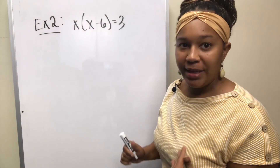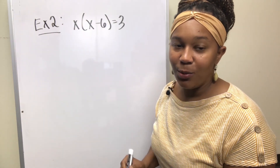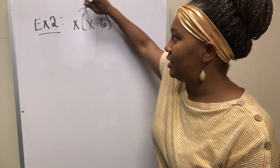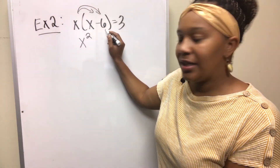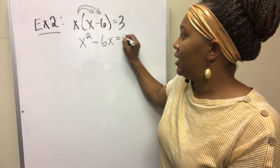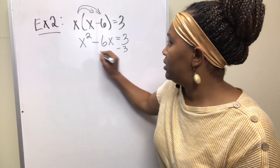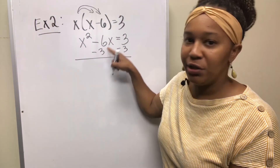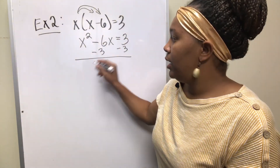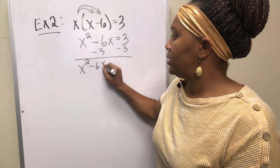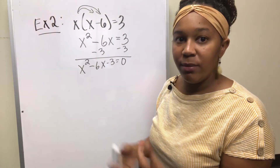Let's try another one. Example 2: solve x times (x minus 6) equals 3. This is a quadratic equation — it doesn't look like one, but we can make it look like one. First, distribute the x: x times x is x squared, and x times 6 is minus 6x, equals 3. Now get 0 on one side by subtracting 3. Since 6x has an x and 3 doesn't, they can't be combined, so this becomes x squared minus 6x minus 3 equals 0.